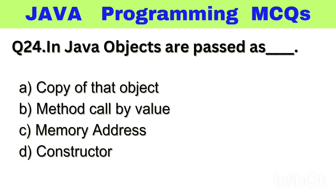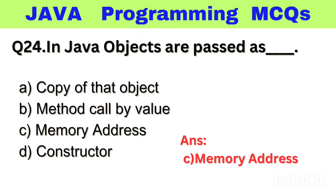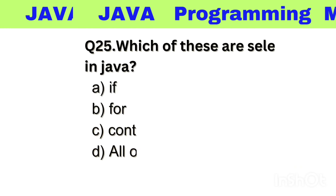Question number 24. In Java, objects are passed as dash. Option A: Copy of that object, B: Method call by value, C: Memory address, D: Constructor. The right answer is option C, Memory address.